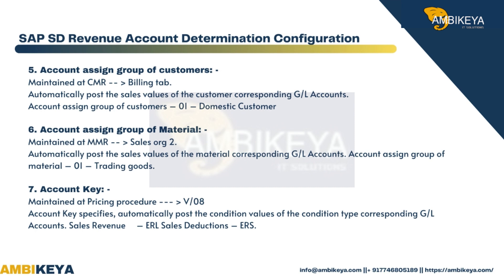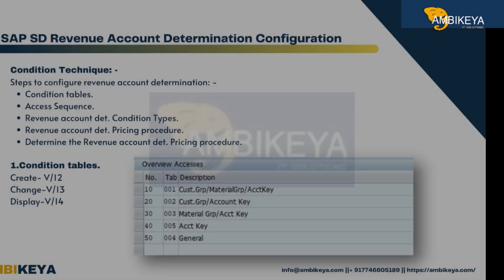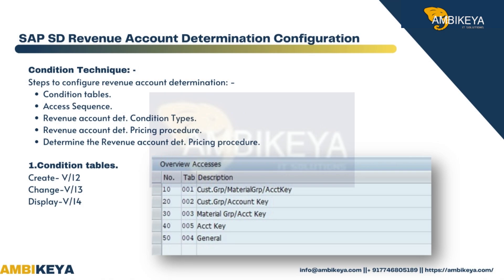Account key is maintained at the pricing procedure. Account key specifies to automatically post the condition values of the condition type to the corresponding G/L accounts — sales revenue ERL, sales deductions ERS. Condition technique steps to configure revenue account determination: condition tables, access sequence, revenue account determination condition types.